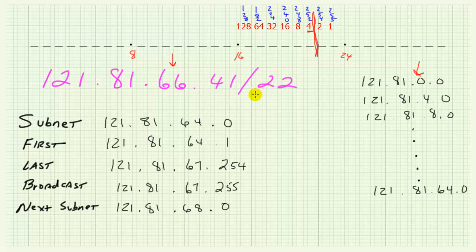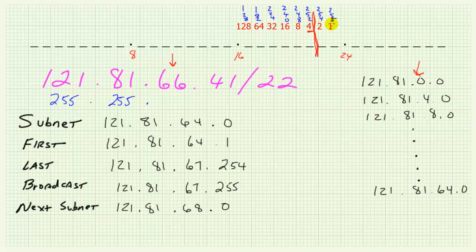To find the decimal subnet mask, we write a number that converts to binary as a series of ones stopping after the 22nd bit. The first 16 bits are all network, so we write 255.255 for the first two positions. Now for the interesting octet: I've written the bit weights and their cumulative sums — 128, 192, 224, 240, 248, 252, 254, 255 — a series worth committing to memory. The dividing line falls where the ones stop and zeros begin.